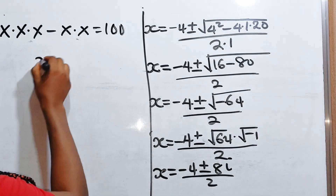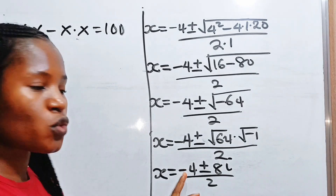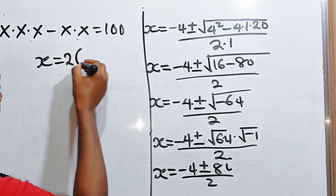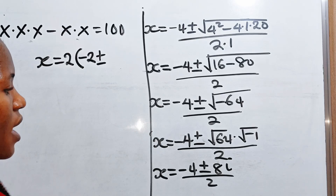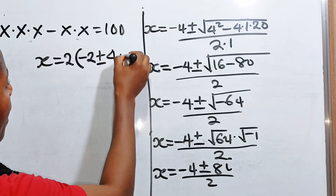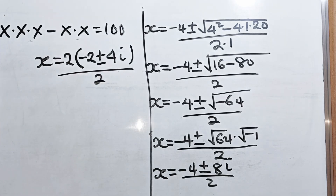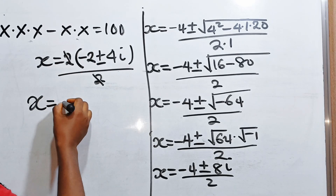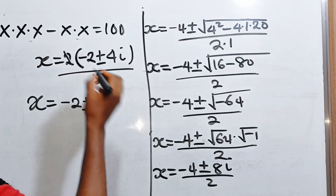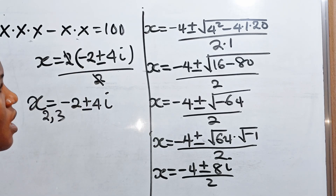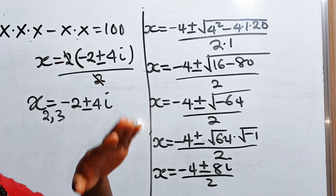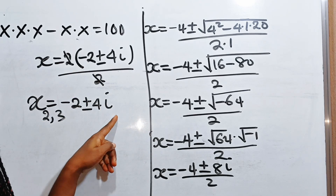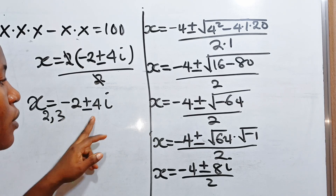Since square root of minus 1 is i, we have x equals minus 4 plus or minus 8i, divided by 2. Let's factorize 2 from the numerator: minus 4 divided by 2 is minus 2, and 8i divided by 2 is 4i, so x equals minus 2 plus or minus 4i. So the second value of x is minus 2 plus 4i, and the third value is minus 2 minus 4i.